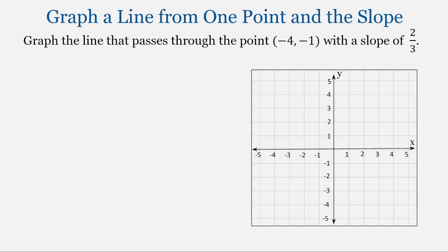Let's graph the line that passes through the point negative 4, negative 1, with a slope of 2 thirds. Let's start by writing down what we know. We have the point negative 4, negative 1, and this point is on our line. So I'm going to go ahead and graph that point. Starting at the origin, we'll move to negative 4 on the x-axis and then down to negative 1. So here is our starting point, negative 4, negative 1.